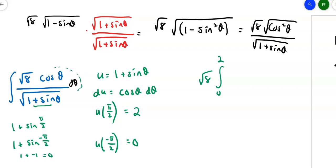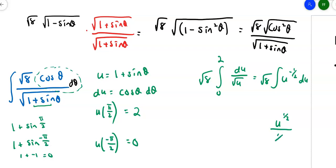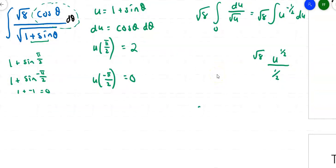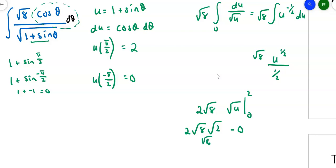The integral becomes √8 times the integral from 0 to 2 of U^(−1/2) dU. Using the reverse power rule — add 1, divide by the new power — we get √8 · 2√U evaluated from 0 to 2, which is 2√8 · (√2 − √0). That gives 2√8 · √2 = 2√16 = 2 · 4 = 8.